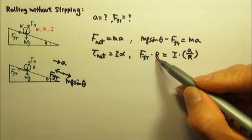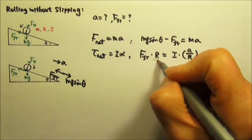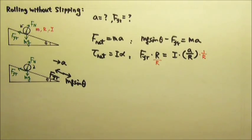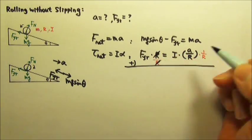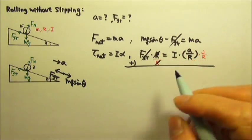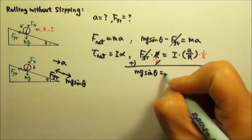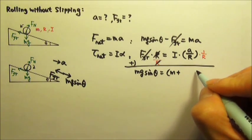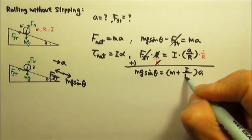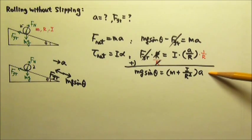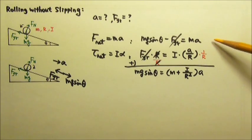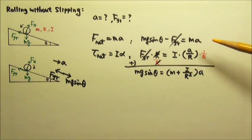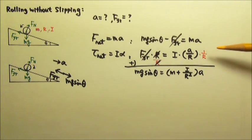If we want to stack the two equations together and add them to cancel friction, we divide the torque equation by r on both sides first. Now we can add them — the r's cancel, and the friction terms cancel. We are left with mg sinθ on one side, and ma plus (I/r²)a on the other. Factoring out a gives mg sinθ = a(m + I/r²). We can use this equation to solve for the acceleration, then plug it back into one of the two equations to solve for friction. We have two equations and two unknowns.